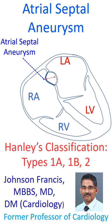Atrial septal aneurysm is an aneurysmal portion in the region of the fossa ovalis with a diameter of at least 1.5 cm and having movement amplitude of at least 1.5 cm or protrusion of at least 1.5 cm.